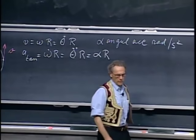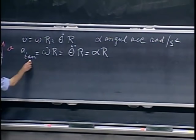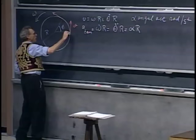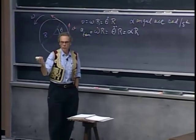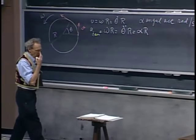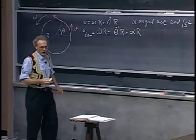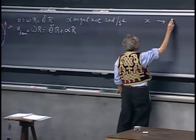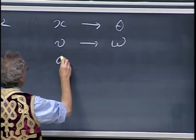Do not confuse a tangential acceleration, which is along the circumference, with a centripetal acceleration. The two are both there. The tangential acceleration makes the speed change along the circumference. If we compare linear motion and want to transfer it to circular motion, you can use all your equations from the past if you convert x to theta, v to omega, and a to alpha.